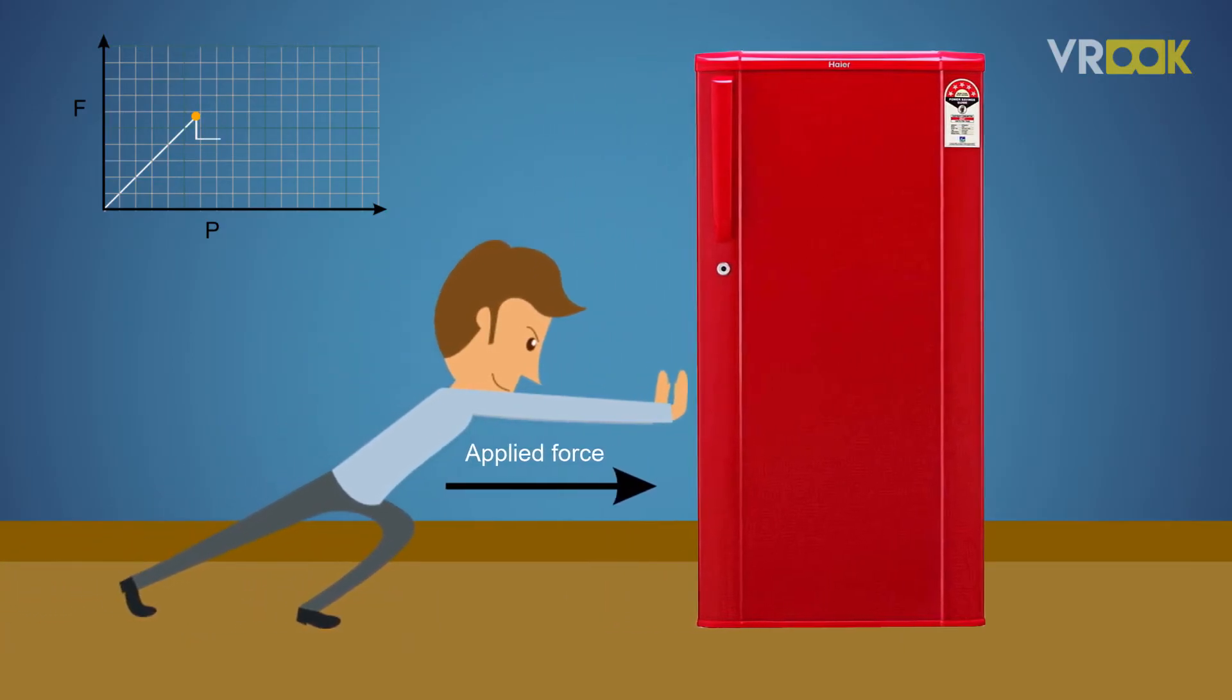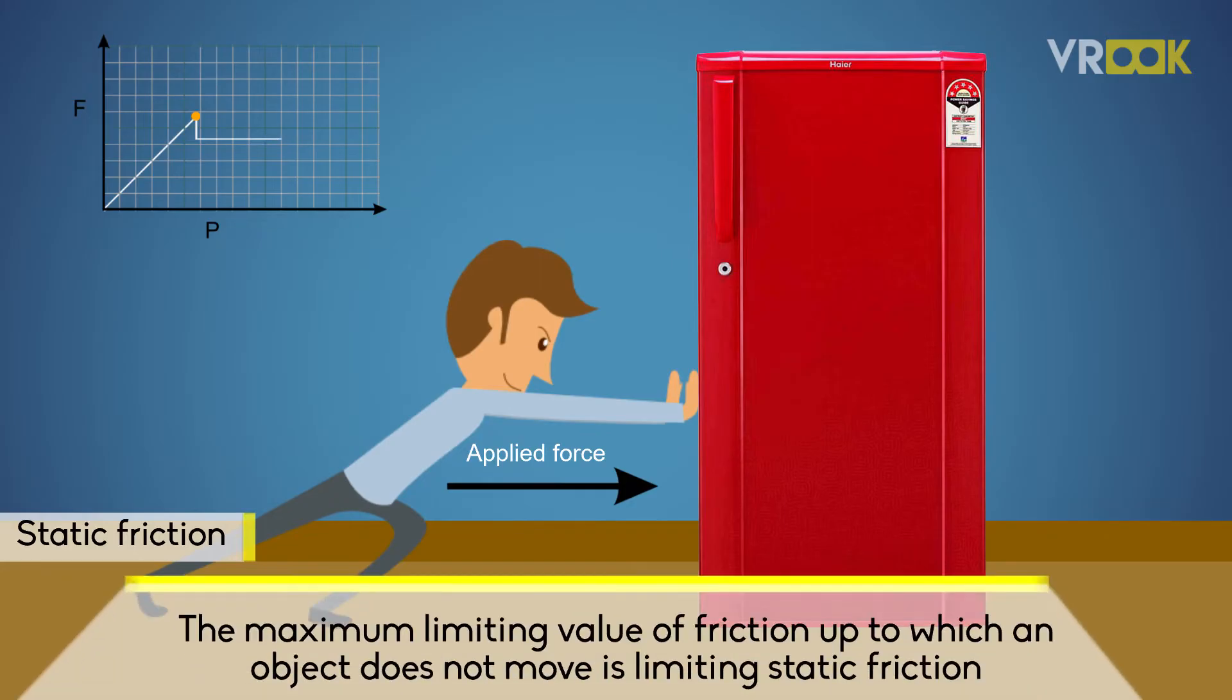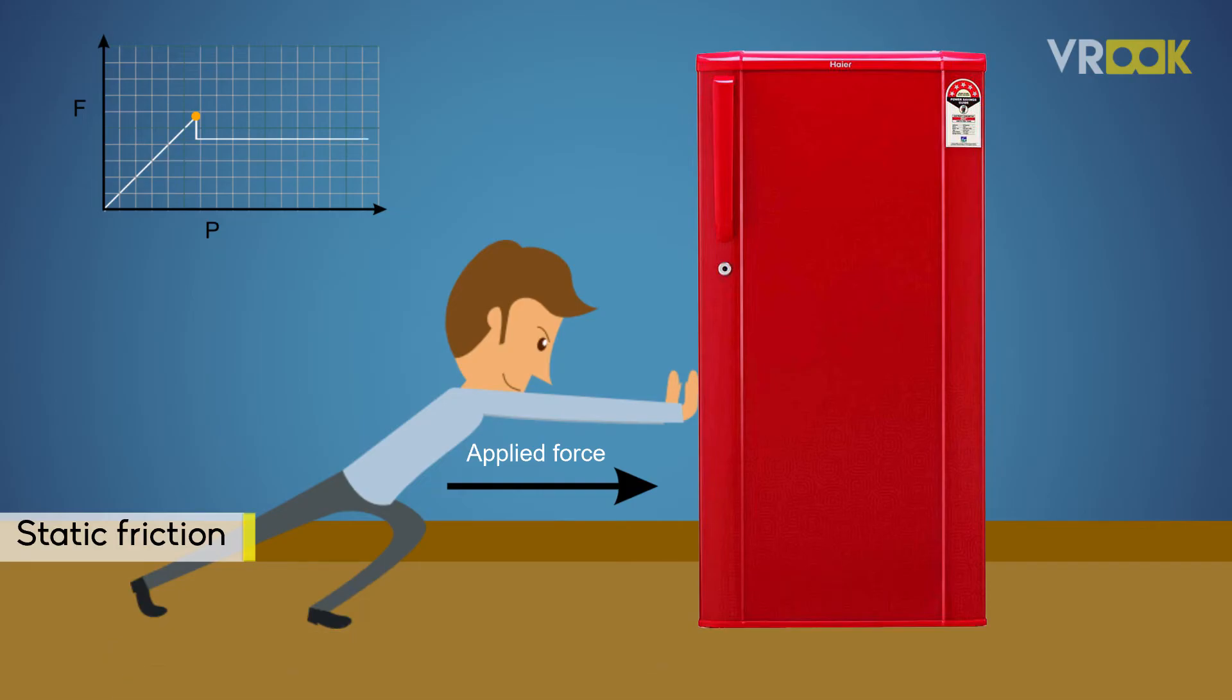Finally, the fridge moves. The force that you overpowered is the static friction. So, the maximum limiting value of friction up to which an object does not move is termed as limiting static friction. It is denoted as FS max.